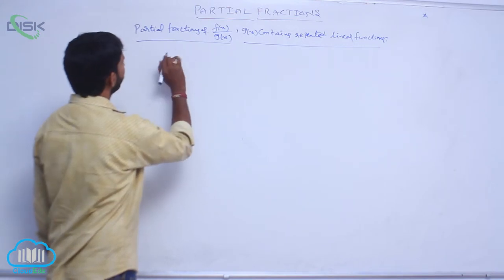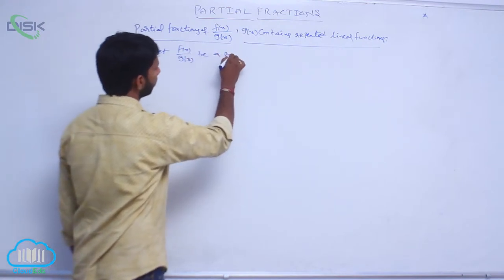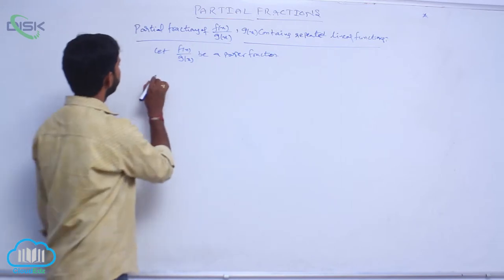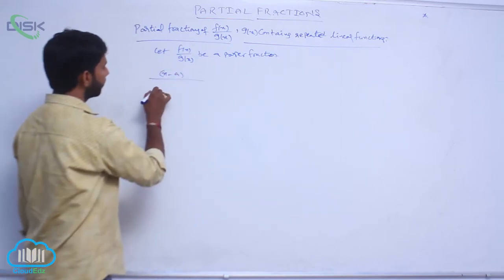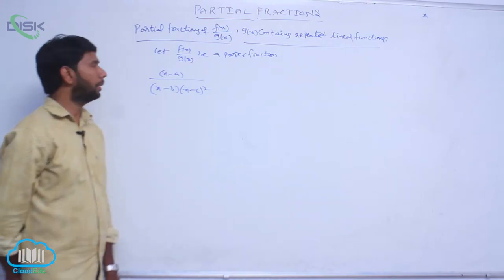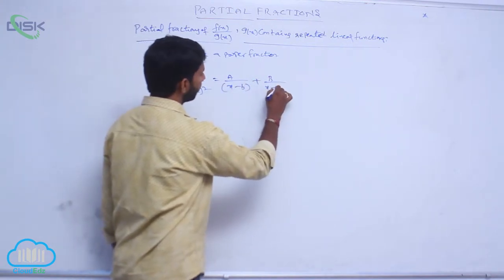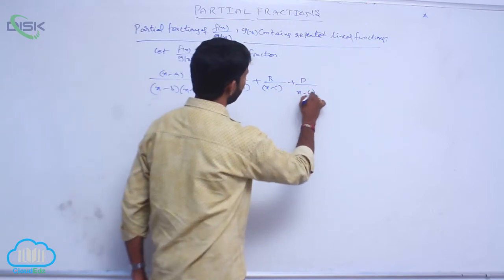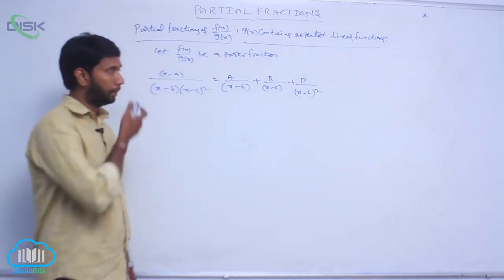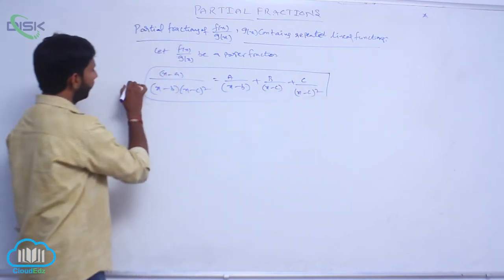The partial fractions form: let f(x)/g(x) be a proper fraction. The first case is of the form (x minus a) divided by (x minus b) times (x minus c) squared, which equals A/(x minus b) plus B/(x minus c) plus C/(x minus c) squared.